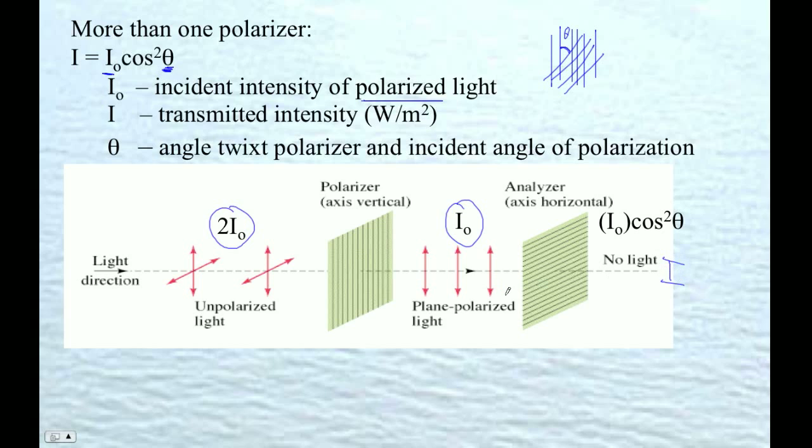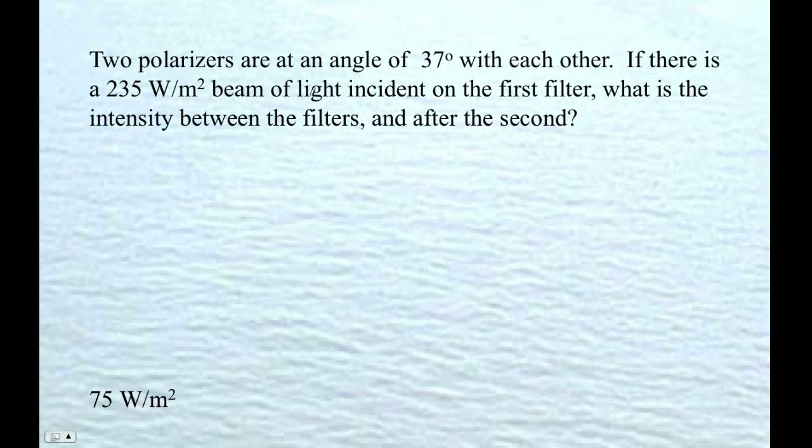So let's do an example of this, of a two polarizer problem. Two polarizers are at an angle of 37 degrees with each other, so maybe one of them is like this, vertically, and then this guy is like 37 degrees, that angle there, we put this thing on top of there, and that's a 37 degree angle.